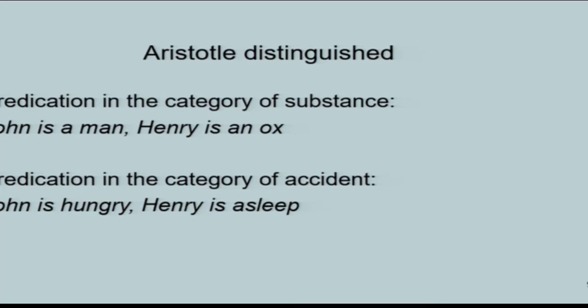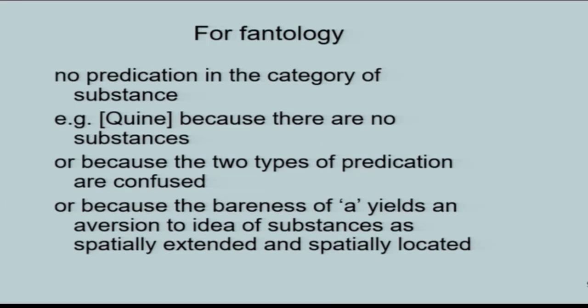For Aristotle, on the other hand, there are predicates which capture something general on the side of the object. Predication in the category of substance tells us that John is not a bare particular. He's a man, which is a complex object with a certain essence or nature. On the other hand, there is predication in the category of accident, which gives us the non-intrinsic features of John. Accidental means non-intrinsic, means you can lose them. You can be awake or you can be asleep. Frege didn't allow predication in the category of substance, and therefore, since Frege invented phantology, neither did the followers in his footsteps.